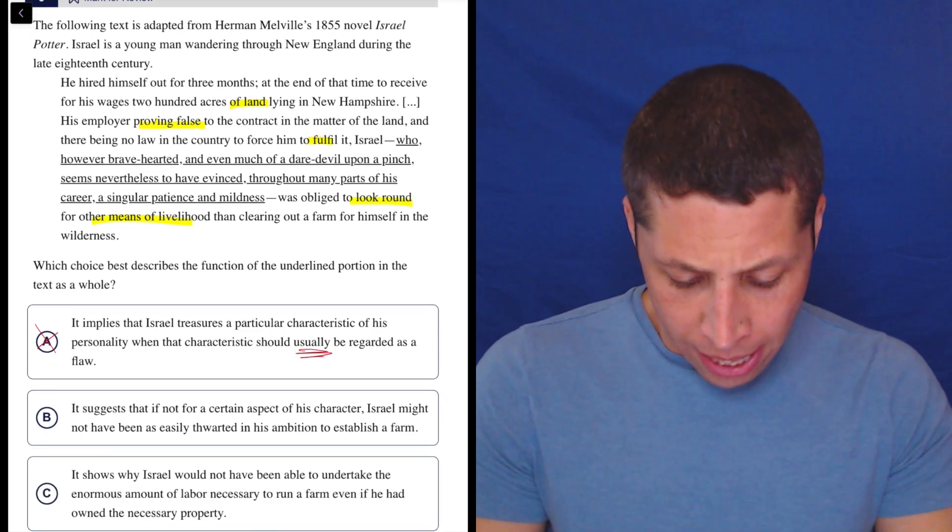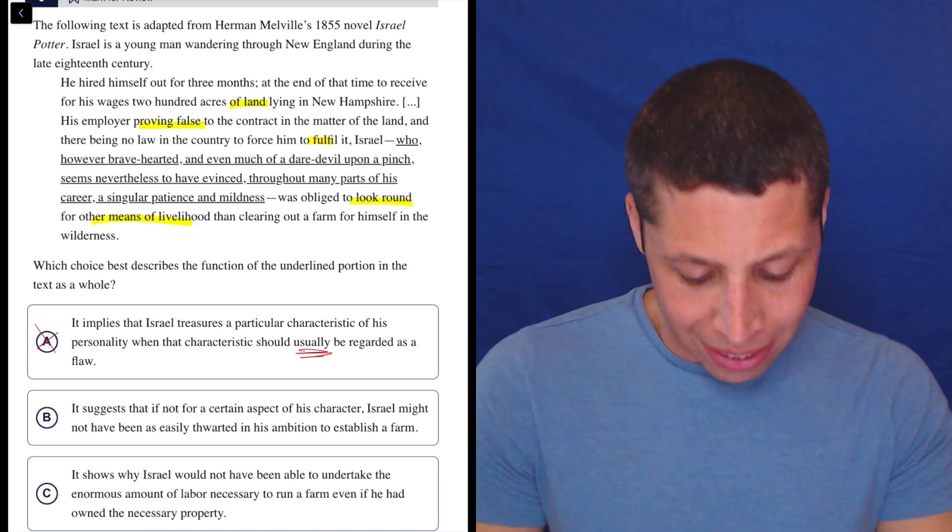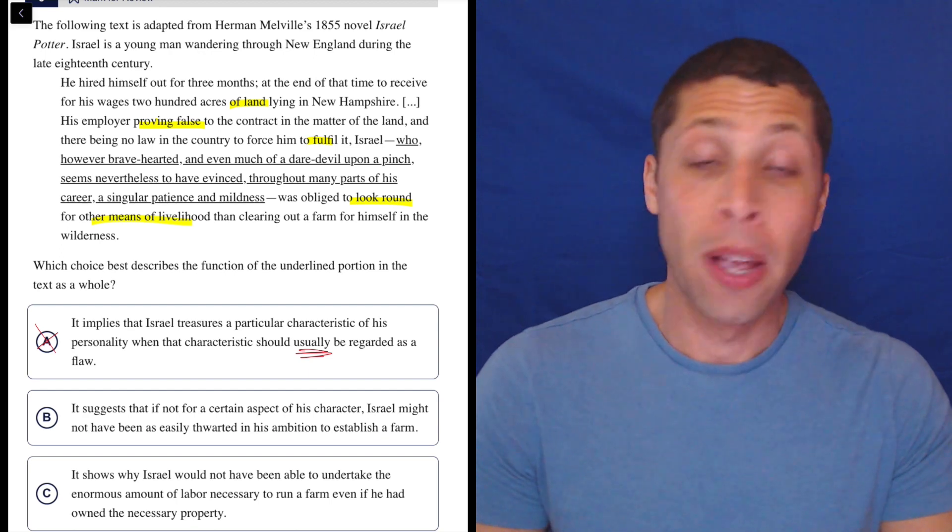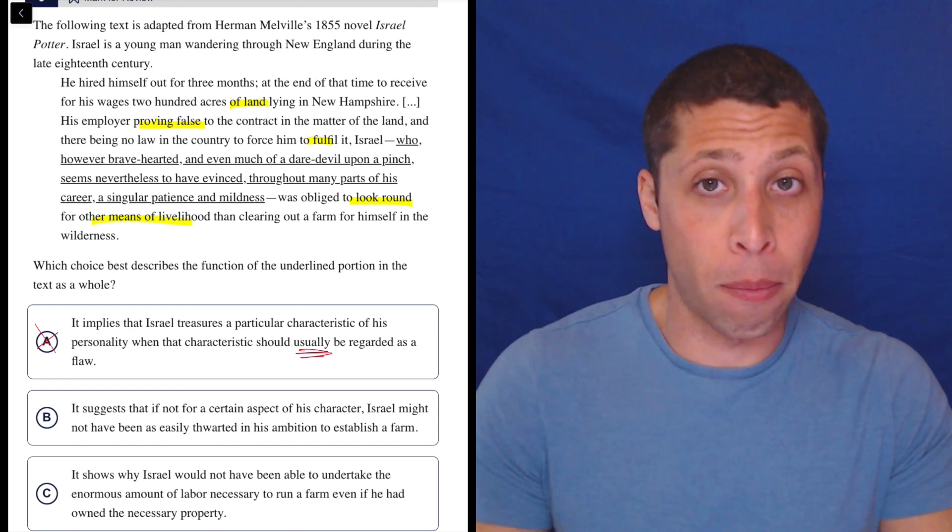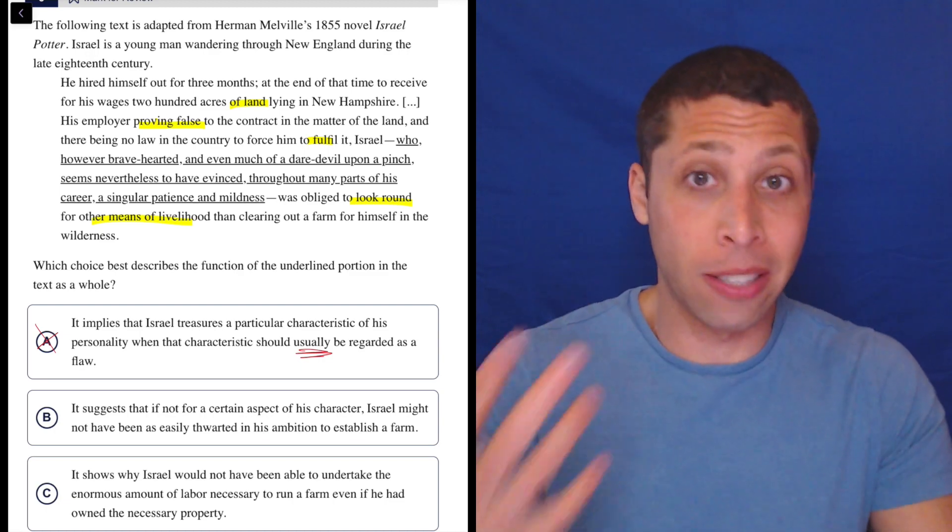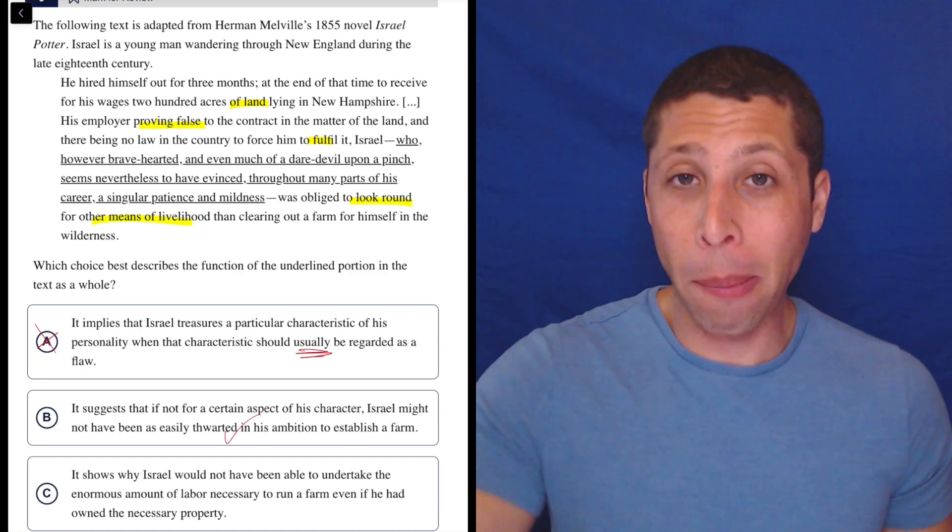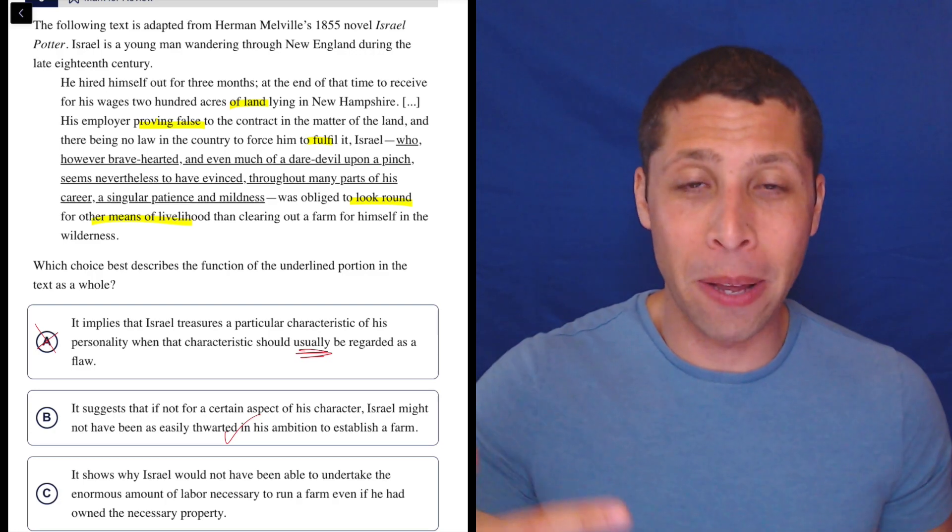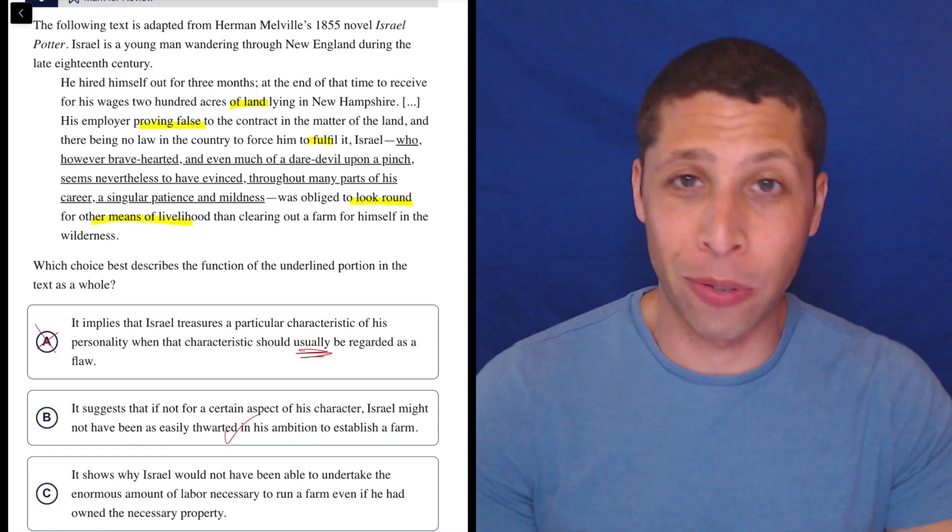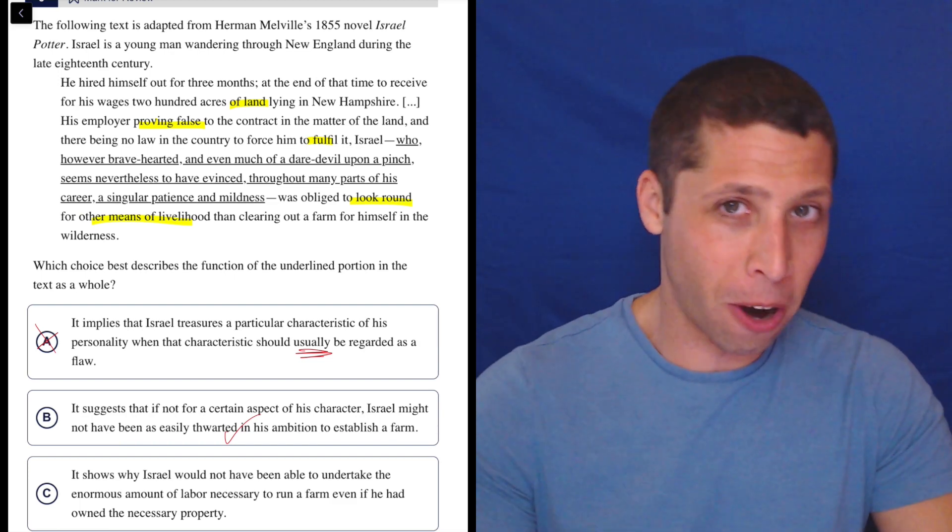That's a good B. It suggests that if not for a certain aspect of his character, Israel might not have been as easily thwarted in his ambition to establish a farm. So first of all, was he thwarted in his ambition to start a farm? Thwart means stopped, right? So was he stopped? Yes, right? That's what I highlight. Basically, he was promised a farm, something, the boss lied, the law is not going to help him. And so he's just like, all right, I guess so much for that dream. And that's it. So he is not establishing a farm according to these lines.